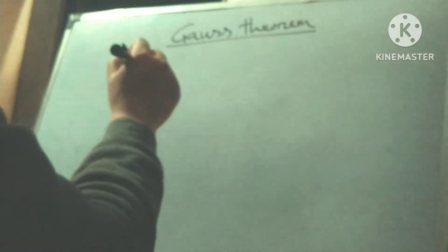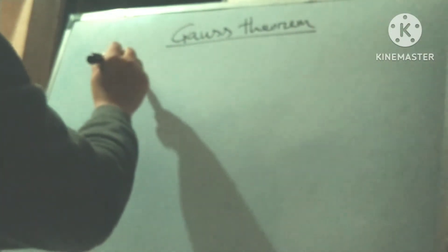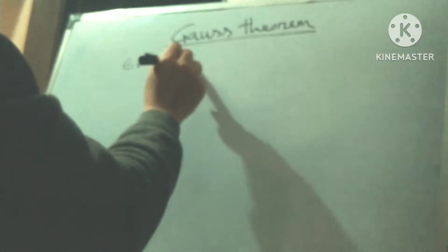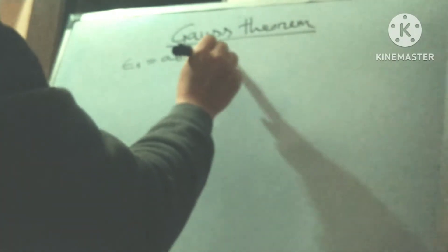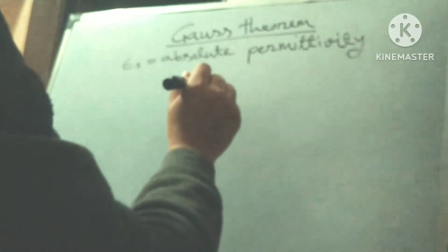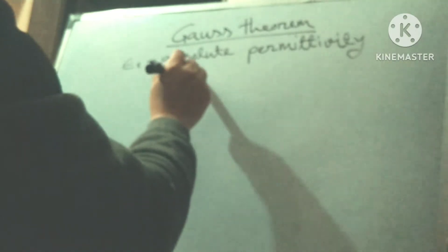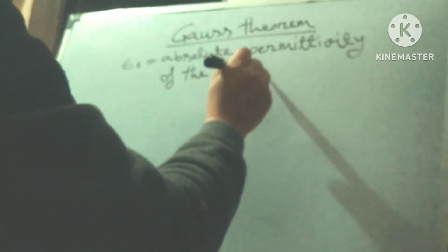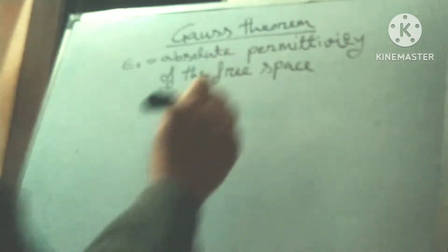So, abbreviation here epsilon 0 equals to absolute permittivity, permittivity of the free space. Epsilon 0 equal to absolute permittivity of the free space.